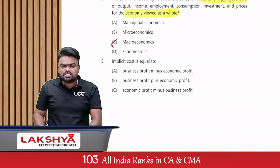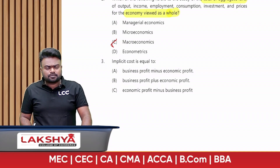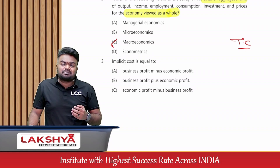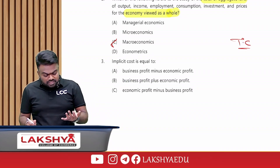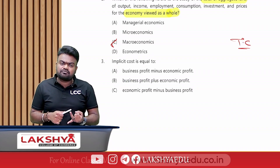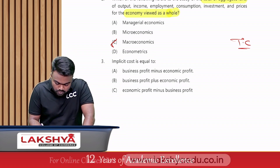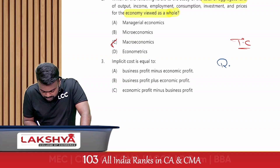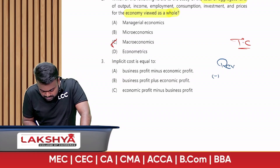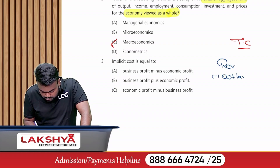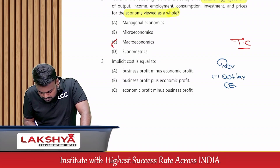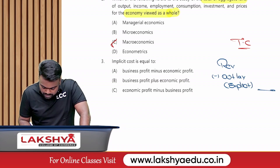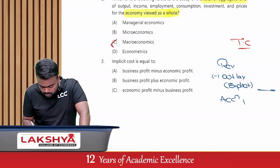Next: implicit cost equals what? In the chapter Theory of Cost, we discussed accounting profit and economic profit. To calculate accounting profit: revenue minus outlay cost, which is also called explicit cost, gives us accounting profit.